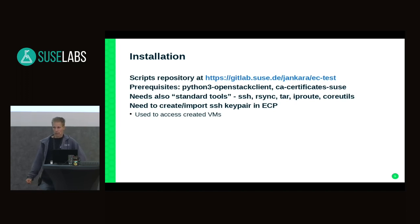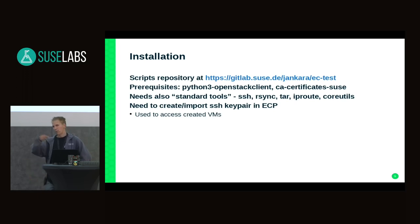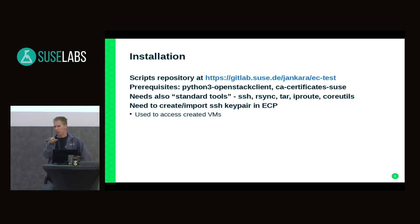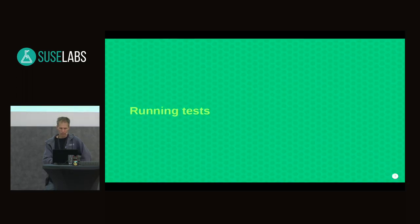Before you start, you also need to import your SSH key into the engineering cloud. The most convenient way is through the web interface — you import your public key under some name, and when you create machines in the engineering cloud, these keys will be automatically inserted into the created virtual machines so you can SSH into them. After you have imported your SSH key, you are basically set up and can start running tests.